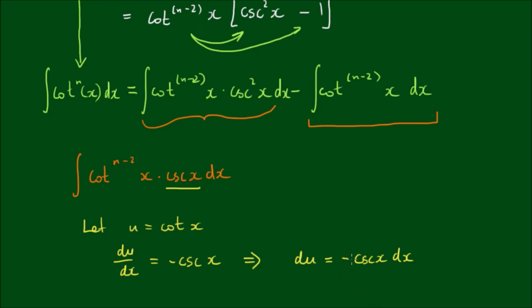And we've got this negative in the front here. Let's write this on the other side, so let's write this as negative du equals cosecant squared x dx.